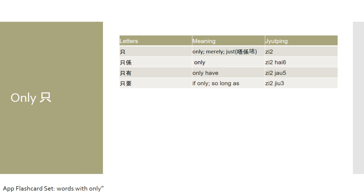Only have in Cantonese is 只有 (ji yau). For example, if I want to say I only have ten dollars, I would say 我只有十元 (ngo ji yau sap yuen). Lastly, if only or so long as in Cantonese is 只要 (ji yiu).